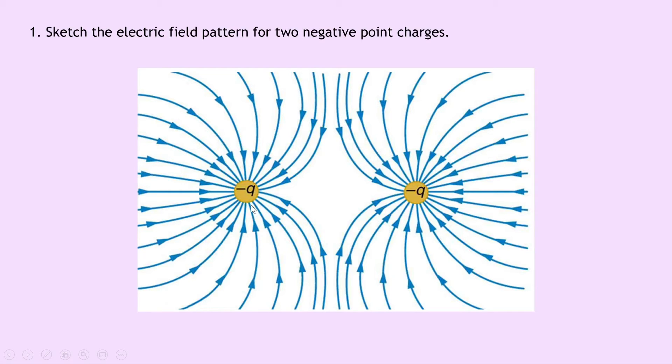Notice how we've got these lines going in around the charges on both sides and they start curving more and more as they get towards the center. Lastly you should also note the direction of the arrows going in towards the negative charges because remember the field lines are drawn in the direction that a positive charge would move in if placed in that field.